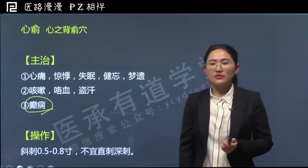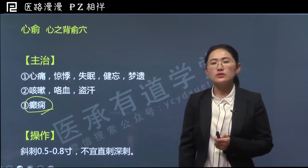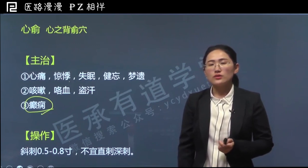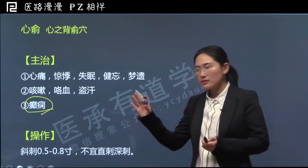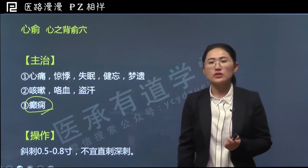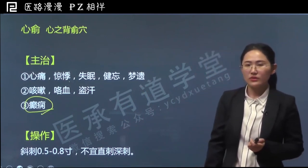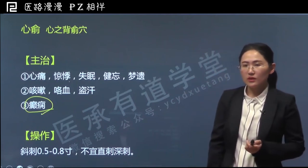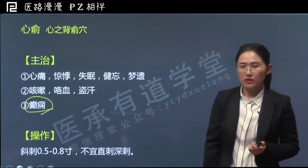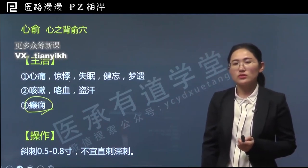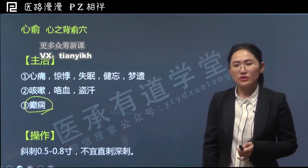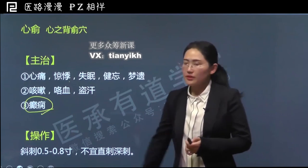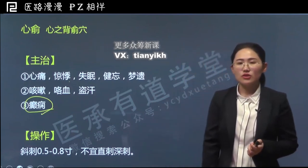心俞可以治疗的最后一个病叫做癫痫，也叫痫病，就是中医内科中经常把它称为痫病，也就是俗称的羊角风。这类病人发作时经常有意识昏迷、倒地不起、口吐白沫、肢体抽搐。这个表现的一大特点就是神智的问题，所以经常可以从心论治，因为心藏神。狭义的神就是指人体的精神意识思维，所以心俞也可以治疗癫痫这个病症。